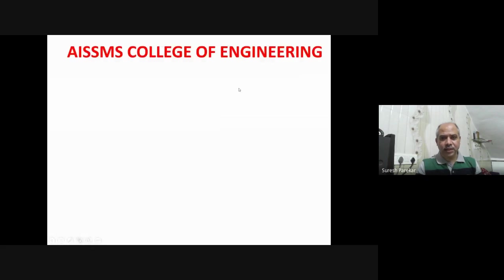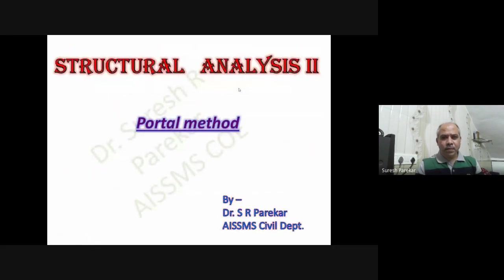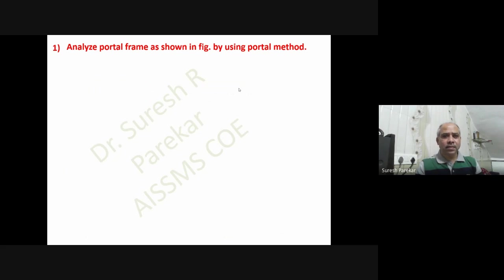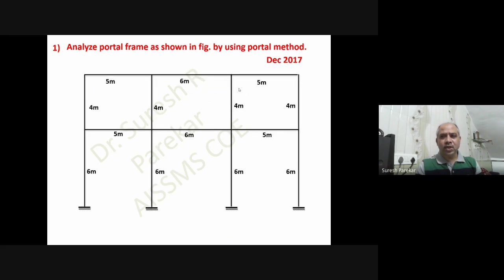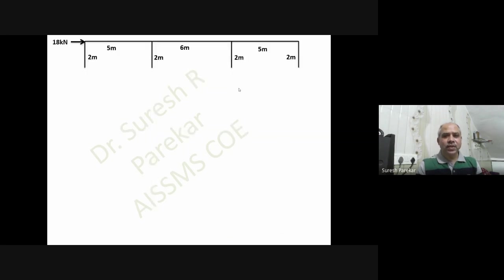This topic has appeared in the last four or five question papers and it is on the portal method. The portal method is an approximate method of analysis. We will analyze a portal frame as shown in the figure using the portal method — this was asked in December 2017. There are three assumptions: mid-span of the beam is an inflection point, mid-height of the column is an inflection point, and interior column shear is twice that of external column shear.